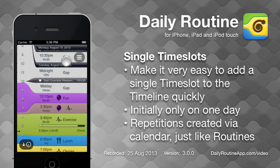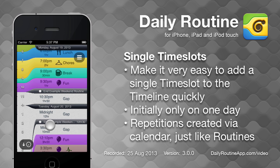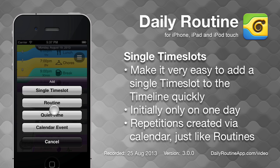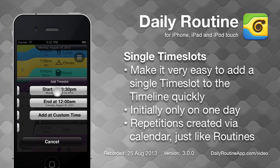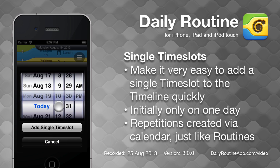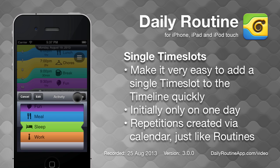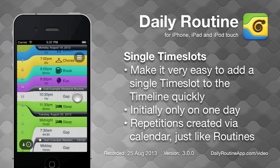In past versions of Daily Routine, adding a single time slot to the timeline required the creation of a dedicated routine, which also had to be scheduled. Now, we just tap the timeline, tap Add, then Single Time Slot. We pick a time and an activity, and the time slot is scheduled on this day. If we want the time slot to repeat, we need to edit the schedule and specify dates for it, just like we saw earlier with the routine.